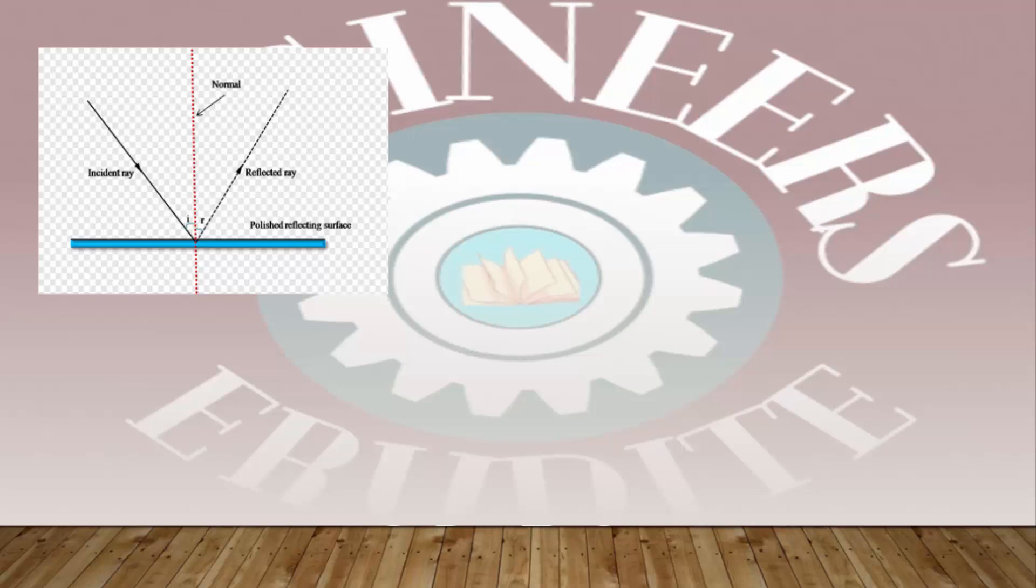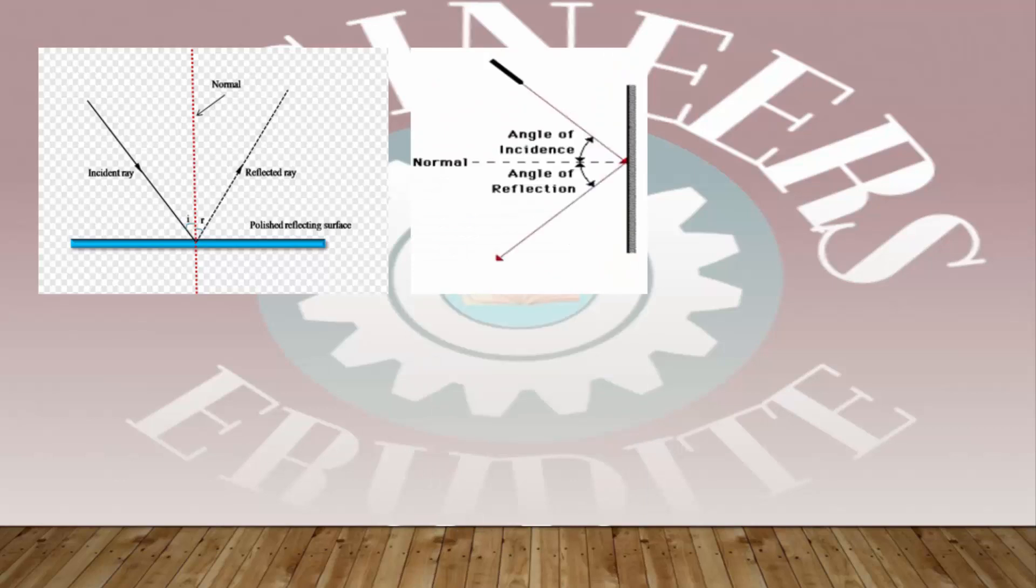Whenever light interacts with the metal or with the substrate, there is a possibility to reflect it back to the same medium, and the angle of reflection should be equal to angle of incidence. You can see in this animation.